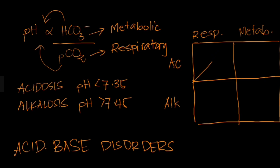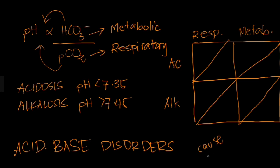We'll further divide each quadrant into two. The upper part of each quadrant will be for the cause of each acid-base disorder, and the lower part would be for the compensation. Let us first describe the causes for each type of acid-base disorder.